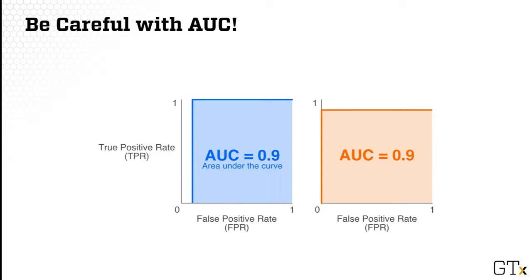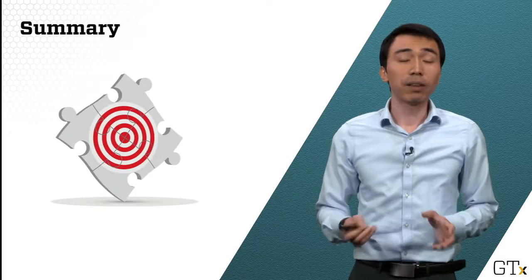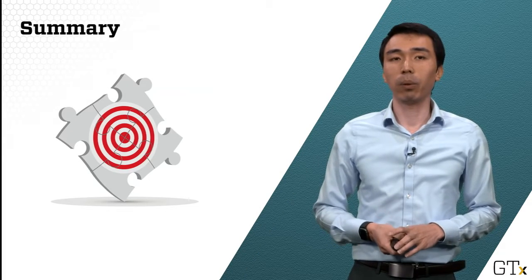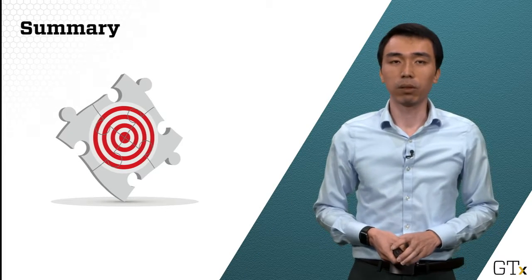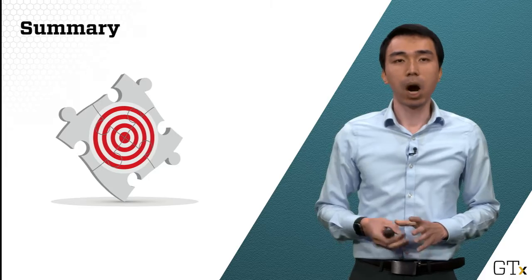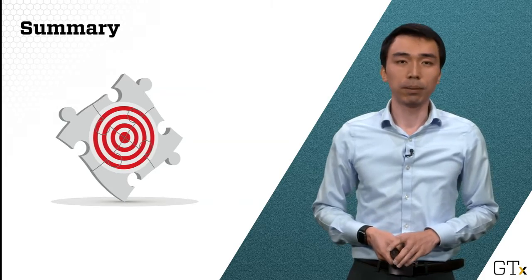Which one is better actually depends on your application. For example, if you're doing cancer detection, then zero false positives would likely be best, because that means you are not misdiagnosing anyone who doesn't actually have cancer. So in this video, we looked at multiple important ways of visualizing classification results: ROC, AUC, and Confusion Matrix.